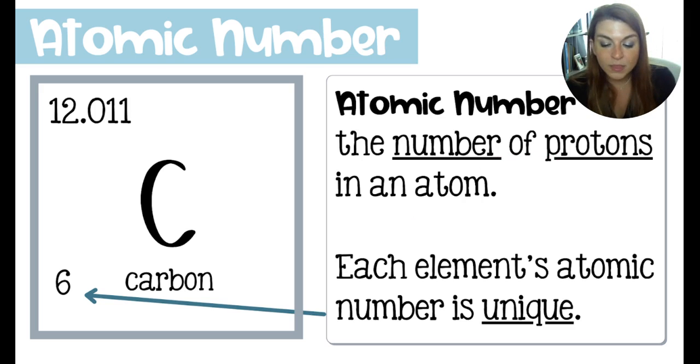There are 118 elements, each with their own atomic number one through 118. Knowing the atomic number of an element can tell you what that element is. So I know that the element whose atomic number is 35 is bromine because I can read that from the periodic table.